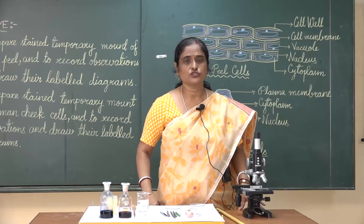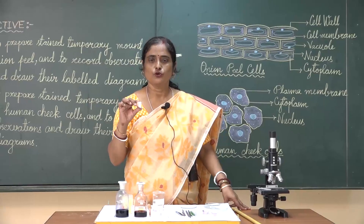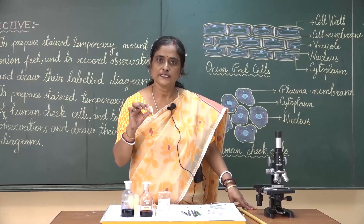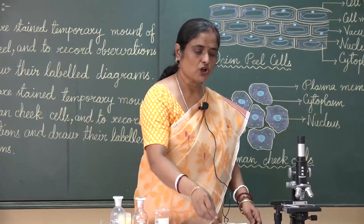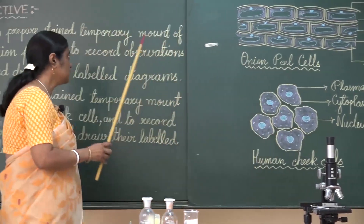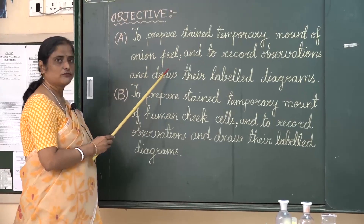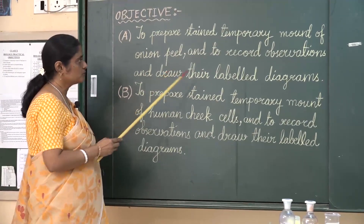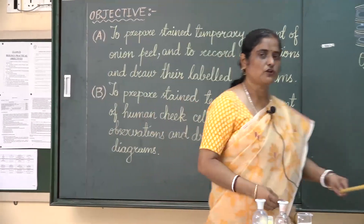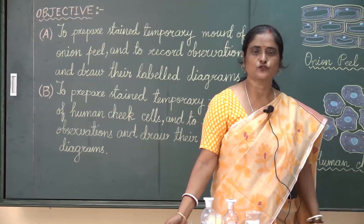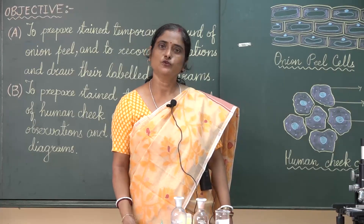So how can we say that plants are also made up of cells? We will use onion to show that cells are present in the plant body. Our objective today is to prepare a stained temporary mount of onion peel and to record observations and draw their labelled diagrams. We will observe the slide under the microscope and then draw the diagram in our notebooks.